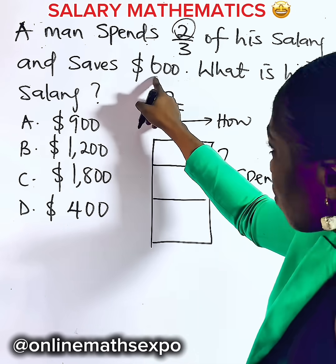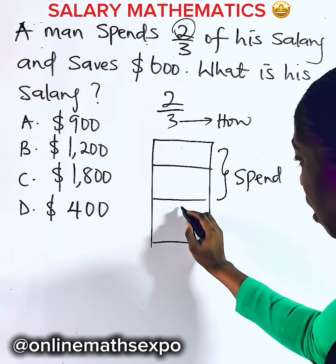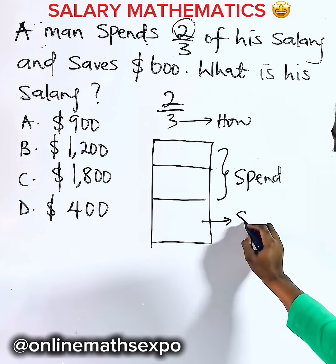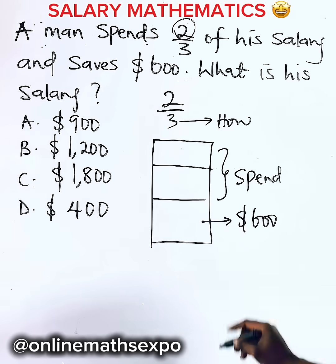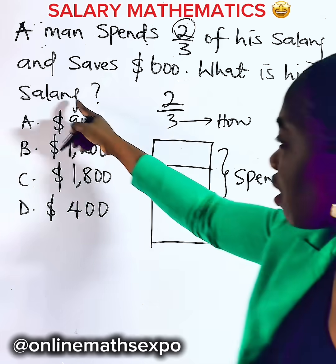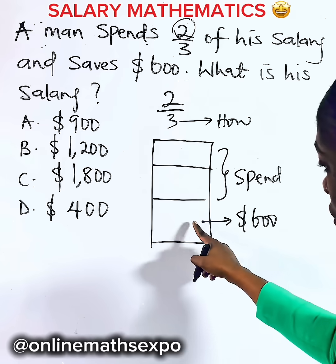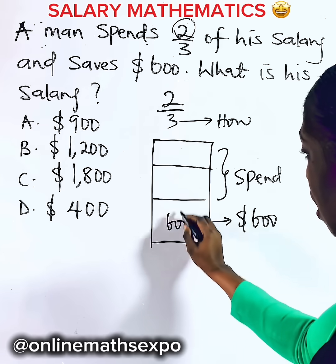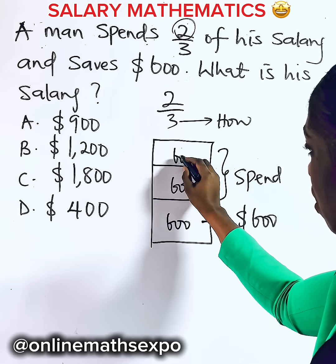And the rest he saves is $600. So the remaining bar, which is this one, is $600. So how do you know his salary? He shared it equally — here is $600, here is $600, here is $600.